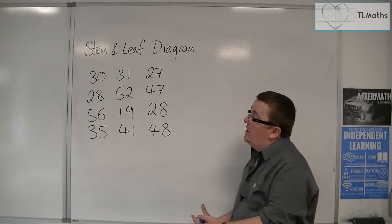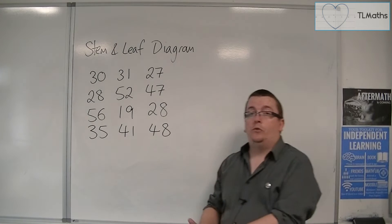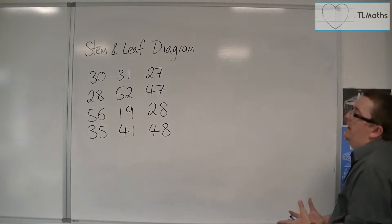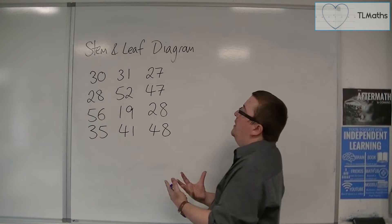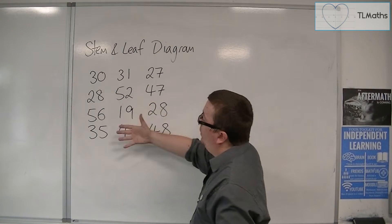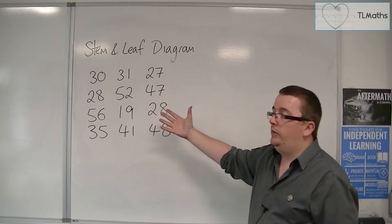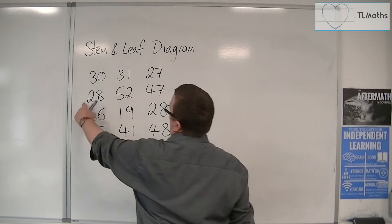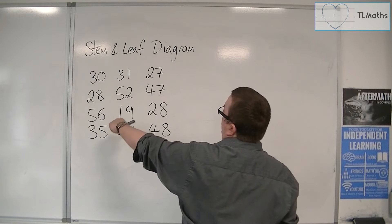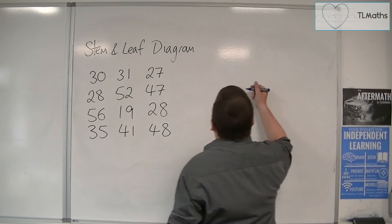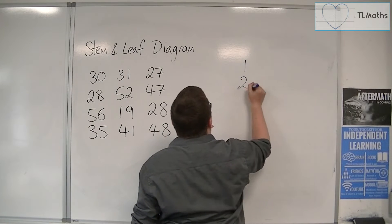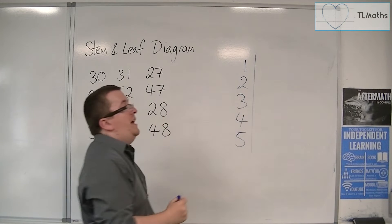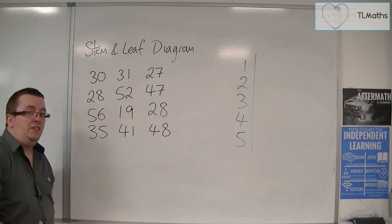A stem and leaf diagram works by finding the stem and then the leaves. The stem is found by looking at the tens column, because they're all in their tens. We can see that we've got 2, 3, 5, 4, 1, so it makes sense to have 1, 2, 3, 4, and 5 as our stem, representing the tens column.